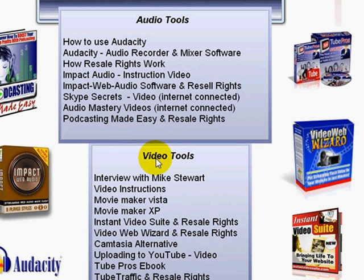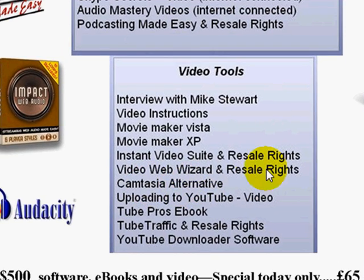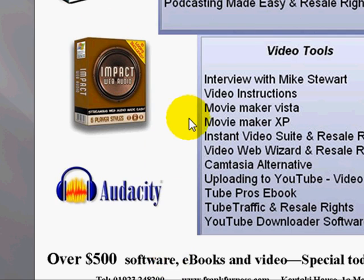Podcasting — how to use podcasting. Video Tools: this is an interview with Mike Stewart, the Internet Video and Audio Guy, on how to make online videos — what toolkit you use, what kind of cameras, all of those things. Movie Maker. Video Web Wizard, which is one of my favorite products — that alone sells for about $97 on the internet. Camtasia will cost you $299. Tube Pros — this book shows incredible secrets I'm already using on YouTube, where I've got about 600,000 viewings across my 130 videos. Tube Traffic and YouTube Downloader Software. Again, that's over $500 worth of software on that CD.